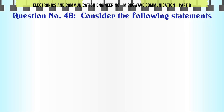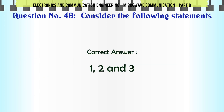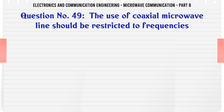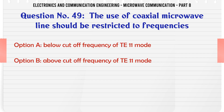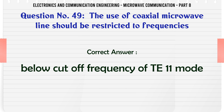Consider the following statements — A. 1, 2 and 3, B. 1 and 2 only, C. 1 and 3 only, D. 2 and 3 only. The correct answer is 1, 2 and 3. The use of coaxial microwave line should be restricted to frequencies below the cutoff frequency of TE11 mode.